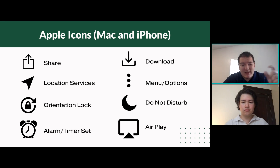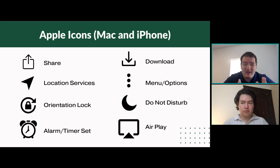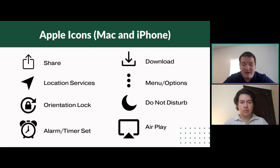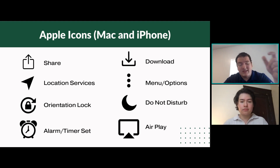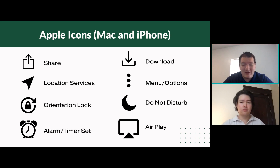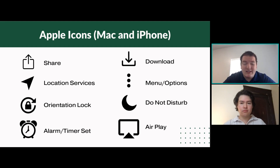That icon just means location is being used in the background — not necessarily a bad thing. The next one is the orientation lock. When you see this icon activated in the top right, it means your phone's orientation is locked. So if you're holding it vertically and turn it sideways, the screen won't flip. If it's off, the screen will flip — useful for different situations. The alarm clock icon, when you see it as an app, you click it to set a timer or alarm. But if you see it at the top of your phone, it means an alarm or timer has already been set.